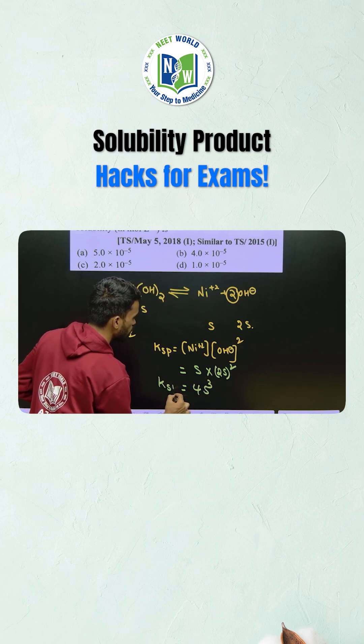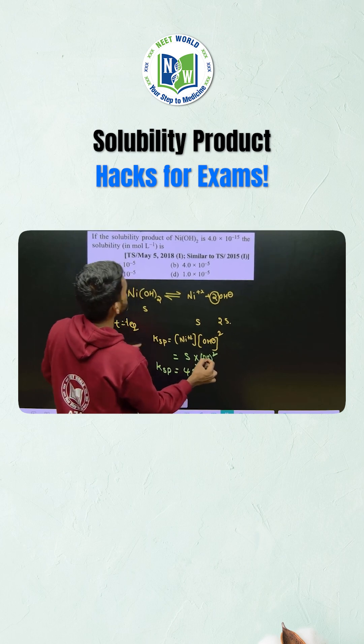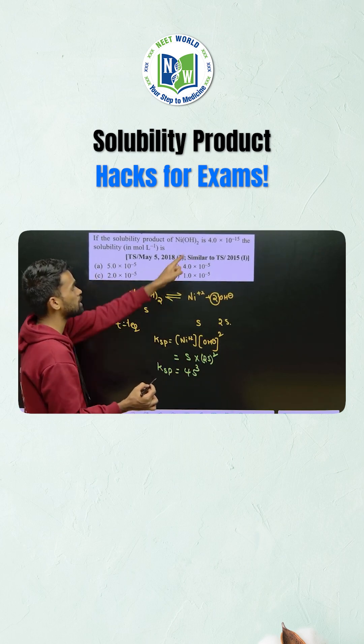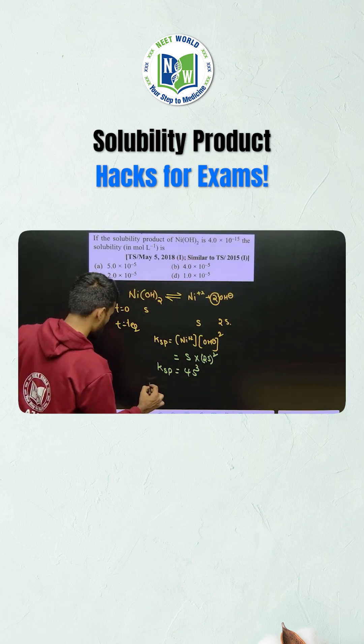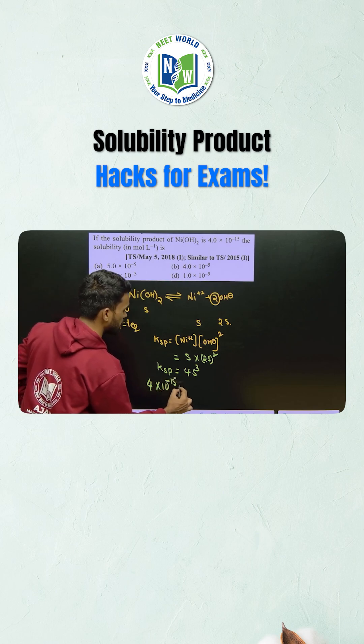KSP is 4S cube. From here, substitute the KSP value. The solubility product KSP is given as 4 into 10 power minus 15, right now.